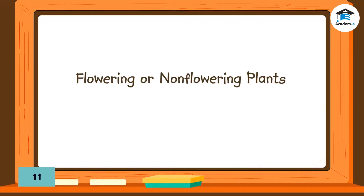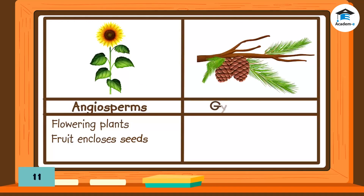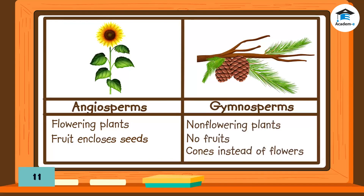Plants that reproduce sexually can be flowering plants known as angiosperms, or non-flowering plants known as gymnosperms. Angiosperms have enclosed seeds — these are the seeds found inside a fruit. Gymnosperms do not produce fruits to protect their seeds; often these plants produce cones instead of flowers.